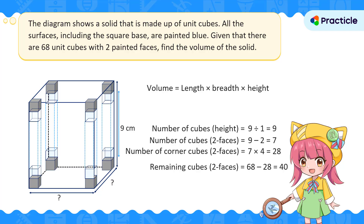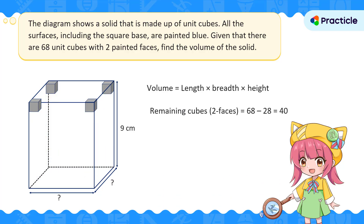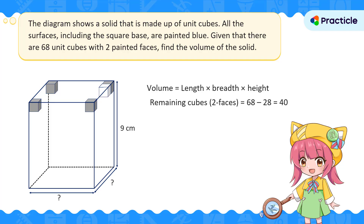Let's look at the cubes in between the corner cubes at the top layer. The cube on the right has its top and one side painted — that's two painted faces. The cube at the back has its top and back painted — also two. The same applies to cubes on the left and front sides. All cubes in between the corner cubes on the top layer have two painted faces. Since the cuboid has a square base, the number of cubes making up the length and breadth of the top layer will be the same.